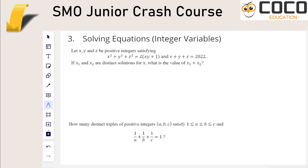Questions that involve integers are ones where there isn't really a standard method. But you have to realize that a question saying 'positive integers' is actually information. Normally all we have are real numbers, not positive integers. Here we have two equations for three unknowns in the first question, and only one equation for three unknowns in the second. It would seem you don't have enough information — but with positive integers, it means there are limited possibilities.